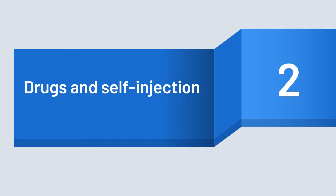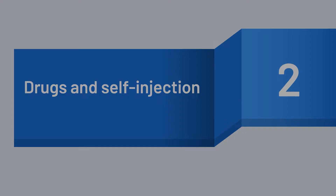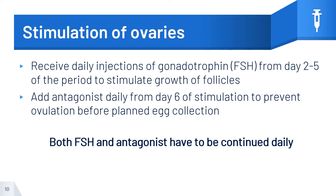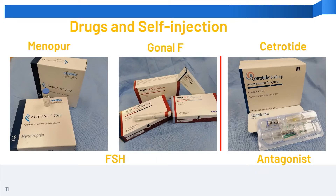I'll go through the drugs and self-injection used in ovarian stimulation. During the stimulation of ovaries, you will receive daily injections of gonadotrophins from day 2 to 5 of the period to stimulate growth of the follicles. We will add antagonists daily from day 6 of stimulation to prevent ovulation before the planned egg collection. Both FSH and antagonists have to be continued daily. These photos show the drugs commonly used in self-injection — on the left side is the FSH, whereas on the right side is the antagonist.